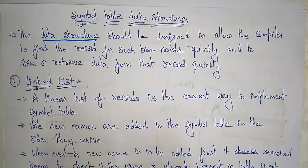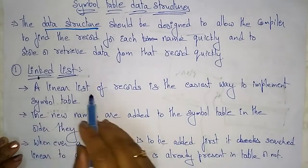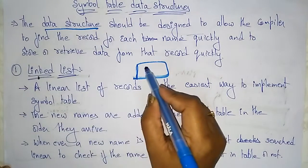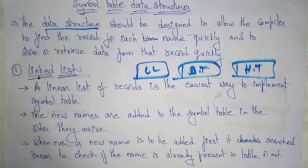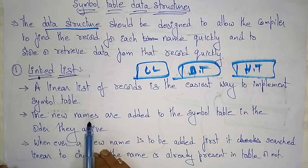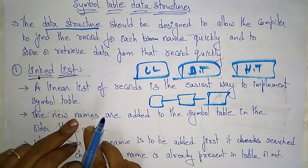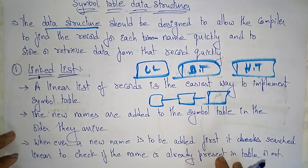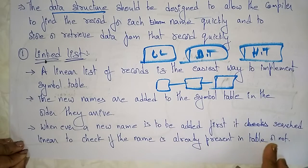What type of data structures can we use in symbol tables for storing and retrieving data? The first is a linked list. A linear list or linked list of records is the easiest way to implement the symbol table. New names are added to the symbol table in the order they arrive. Whenever a new name is to be added, it first searches linearly to check if the name is already present in the table or not.